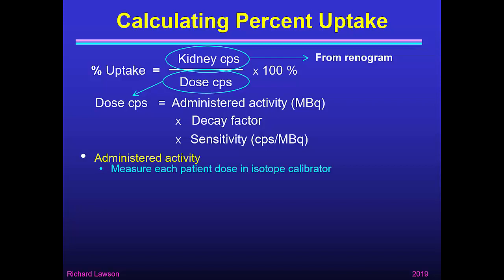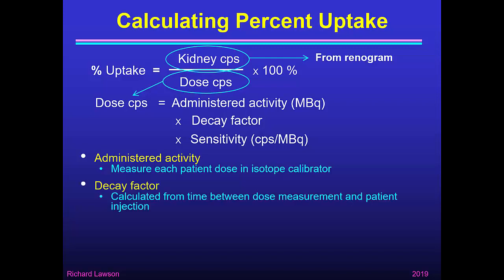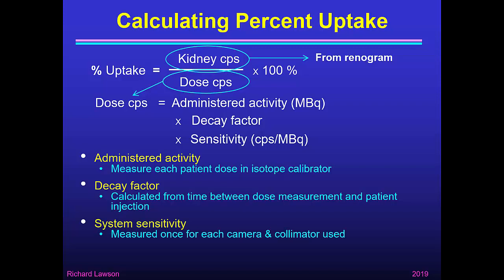We should know the administered activity because we measure each patient dose in an isotope calibrator before injection as a matter of routine, so that doesn't require any additional work. The decay factor is calculated from the time between dose measurement and patient injection, which is easy because we know that time and we know the half-life of the radionuclide, which is usually technetium-99m. So all we need to know is the system sensitivity, which can be measured once for each gamma camera and collimator used for renography.